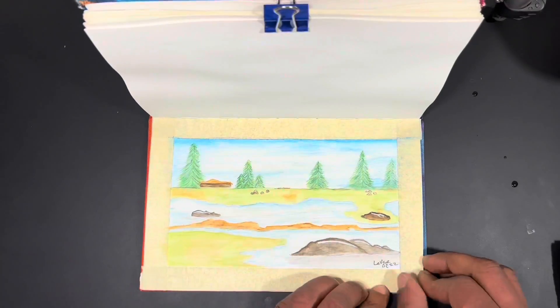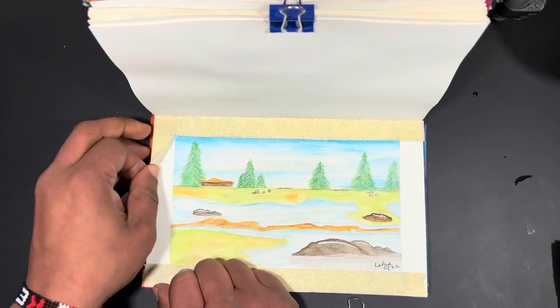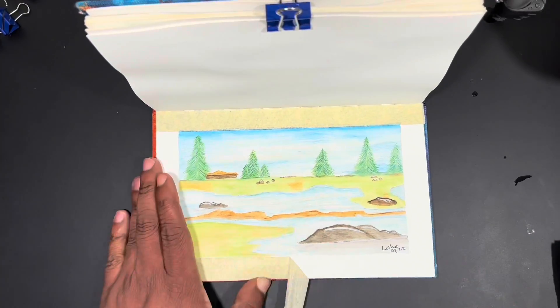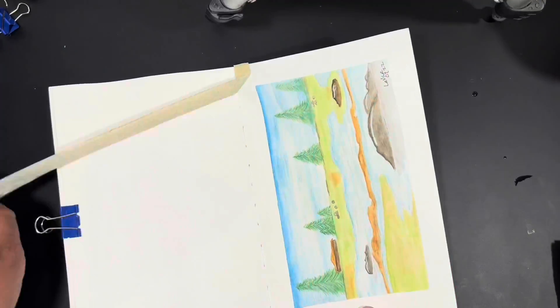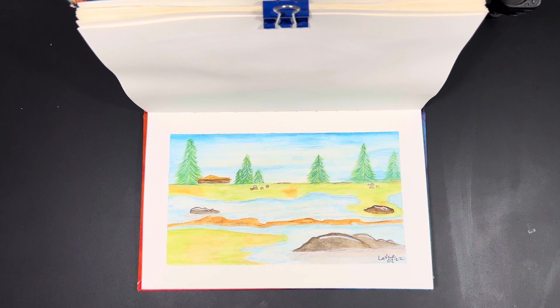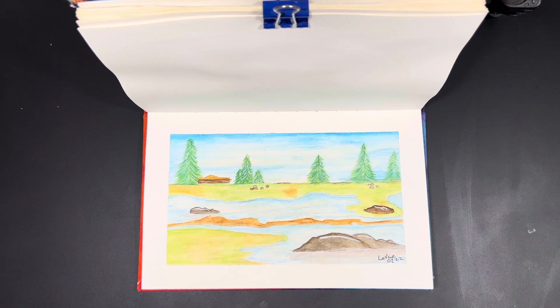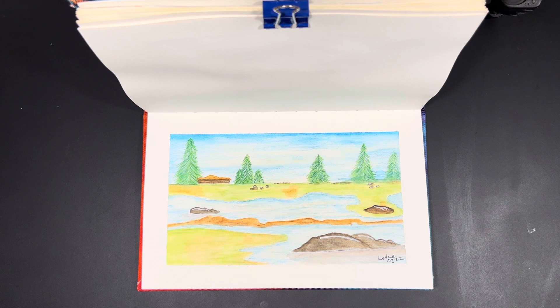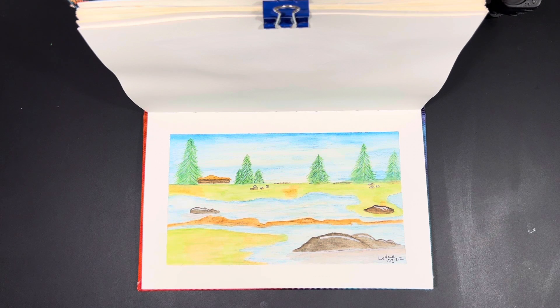I'm going to sign it and then here we'll remove the paper. Remove the tape and I'll see you guys on the other side. So there you have it guys, a completed landscape with the Brunseel Holland watercolor pencils.